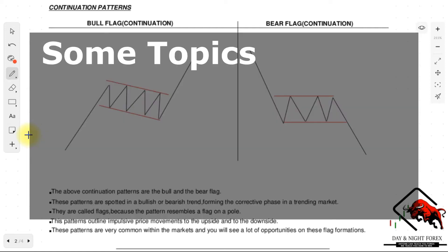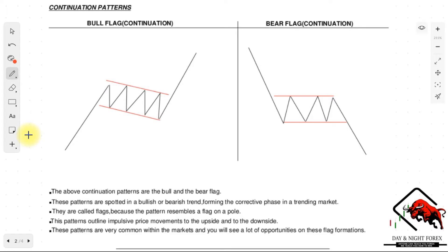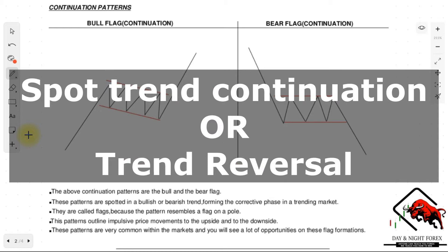So far in this course we've gone through the introduction to forex, and in the second section we touched on candlestick patterns and trend lines — everything you need to know to build up the bank trader strategy. Right now we're going to go through some important patterns — the patterns you see on the chart as it moves up and down — that will help us predict the next movement, whether it's a continuation pattern or a reversal pattern. These are key to spotting continuations and reversal points in the market.